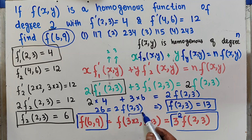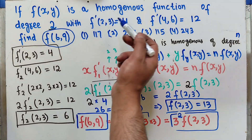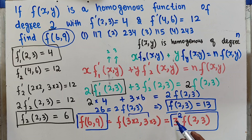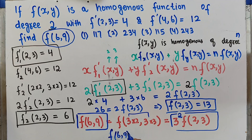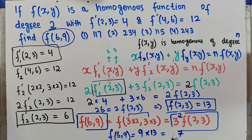Since it is a homogeneous function of degree 2, the exponent of lambda is 2, so we have 3² = 9. Therefore f(6,9) = 9 × f(2,3) = 9 × 13 = 117. The value of f(6,9) is 117.